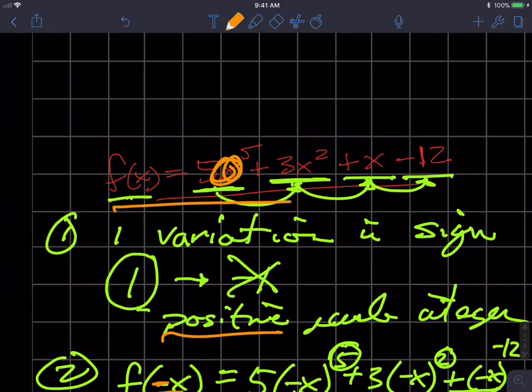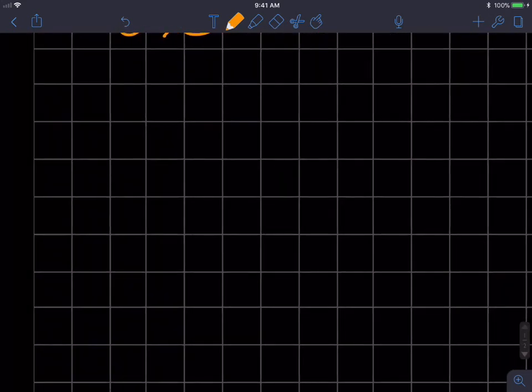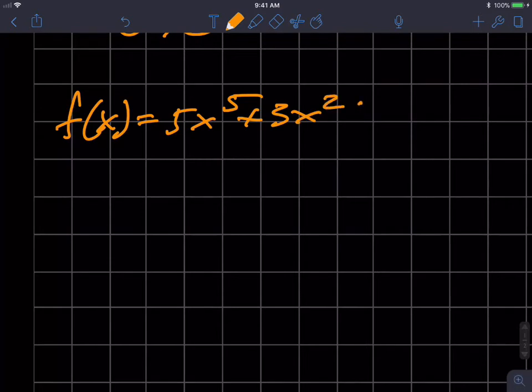So if I go back to this example, this is the same example I used in the video preceding this. So it was f of x equals 5x to the fifth plus 3x squared plus x minus 12. Actually, it's not the same. Never mind. Let's do the rational zeros theorem and figure out my p's over q's. And that's going to be plus or minus 12 over 1. Well, let's do it in parts.